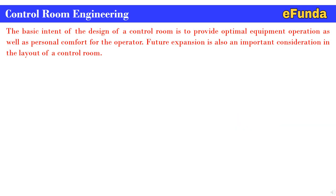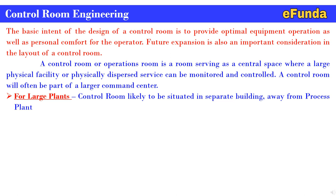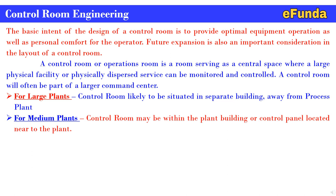The basic intent of the design of a control room is to provide optimal equipment operation as well as personal comfort for the operator. Future expansion is also an important consideration in the layout of a control room. A control room is a central space where a large physical facility or dispersed service can be monitored and controlled. For large plants, the control room is likely situated in a separate building away from the process plant.